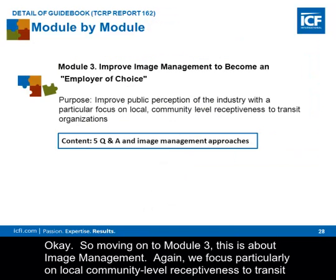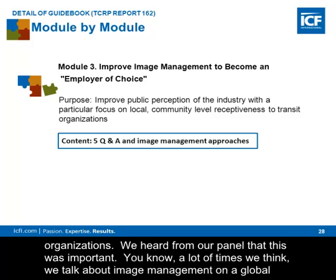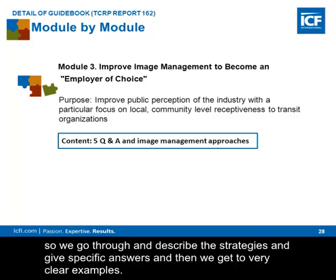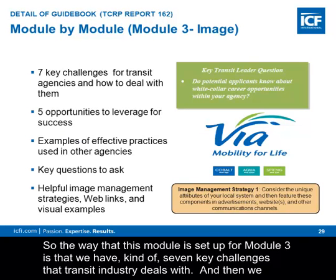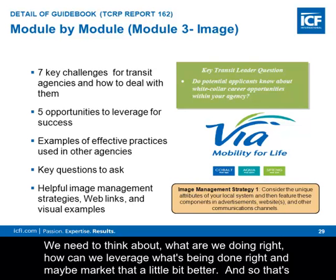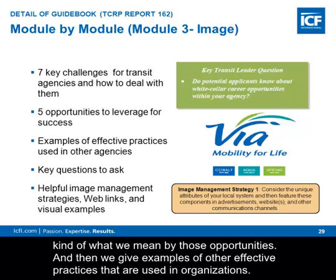Moving on to Module 3, this is about image management. We focus particularly on local community-level receptiveness to transit organizations. Our panel told us this was important — a lot of times we think about image management on a global level, but as smaller organizations we don't know what that means or what our role is in it. We have five questions and five answers describing strategies with specific answers and clear examples. The module identifies seven key challenges the transit industry deals with, and then breaks those down into five opportunities that can be leveraged. We want to think about what we're doing right and how to leverage and market that better.